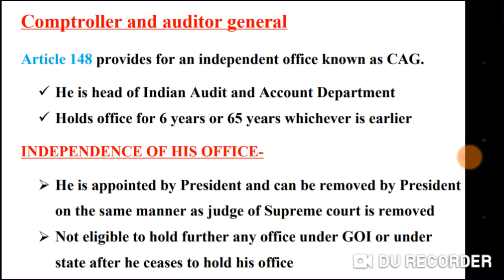Now let's see how the CAG office is independent. First, the CAG is appointed by the President and can only be removed by the President. The removal process is the same manner as a judge of the Supreme Court is removed. After that, once the CAG ceases to hold office, he is not eligible to hold any further office under the Government of India or under any state government.